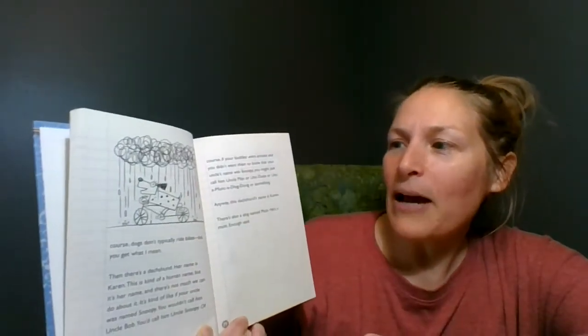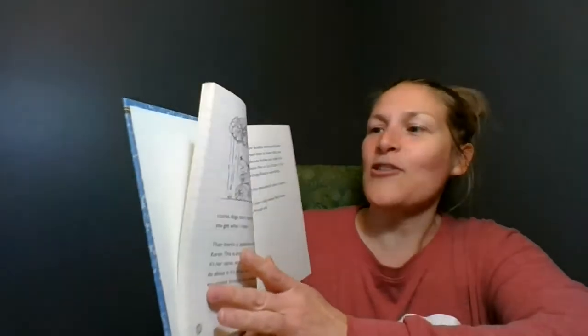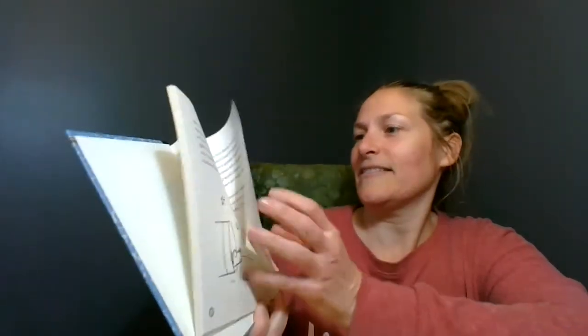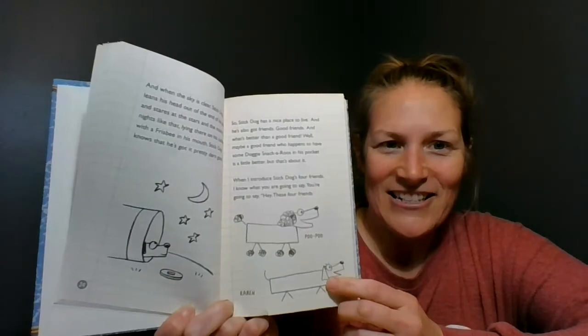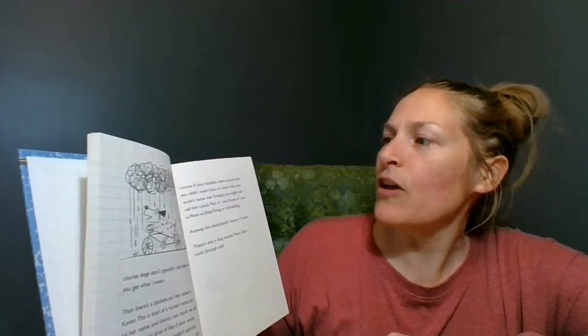See what I mean? If she was, say, all black from nose to tail, their name would probably be Snowball. Stripes is the kind of dog who would look at a gray rainy day and say something like, let's go on a picnic, or what a great day for a bike ride. Of course dogs don't typically ride bikes, but you get what I mean.